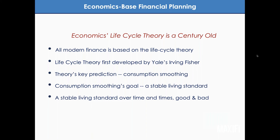Consumption smoothing is also about smoothing not just over time but across good times and bad times. A good time is when you don't have an expensive operation costing $300,000; a bad time is when you do. A good time is when your house doesn't burn down; a bad time is when it does. A good time is when the stock market booms; a bad time is when it crashes. Economics says you want a stable living standard across those good and bad times.